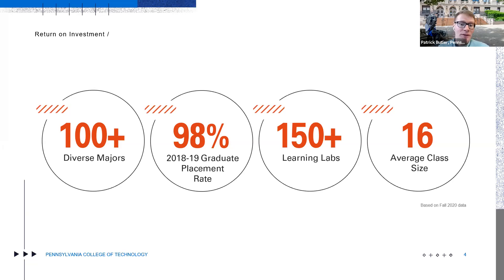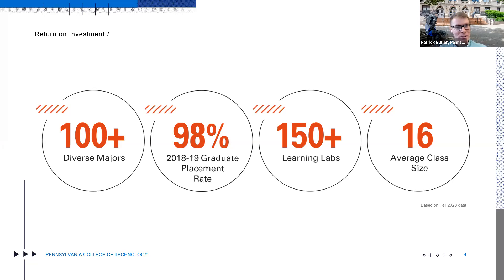We have over 150 learning labs on campus. That nursing lab model is the same across all of our different programs. Students spend a lot of time in lab, and we keep class sizes relatively small — about 16 students per class — by design, to allow you a lot of face time with faculty but also with each other. Learning in small groups and working in teams is an integral part of preparation for the workforce.